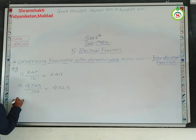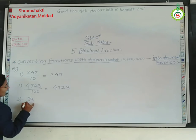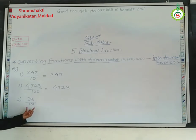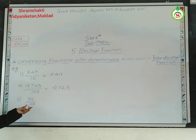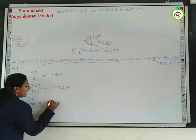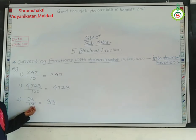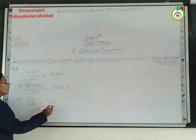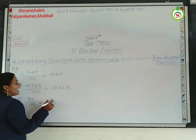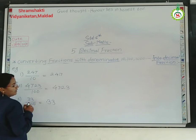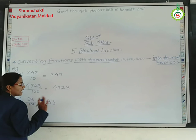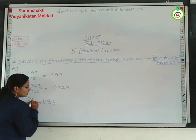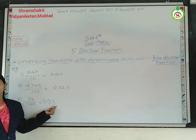Next example: 33 upon 100. Here the number is 33 and the denominator is 100. Write down 33 as it is. How many zeros are there? Two zeros. So you have to leave two places — one, two — and after that give the point here. Now here there is no digit before 33, so put 0 here. So we get 0.33.